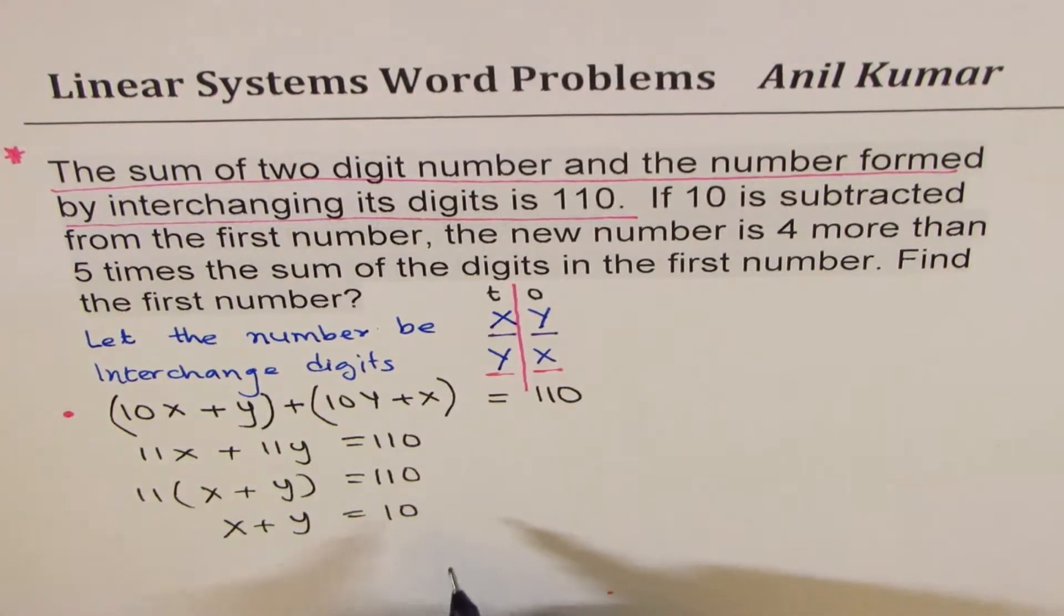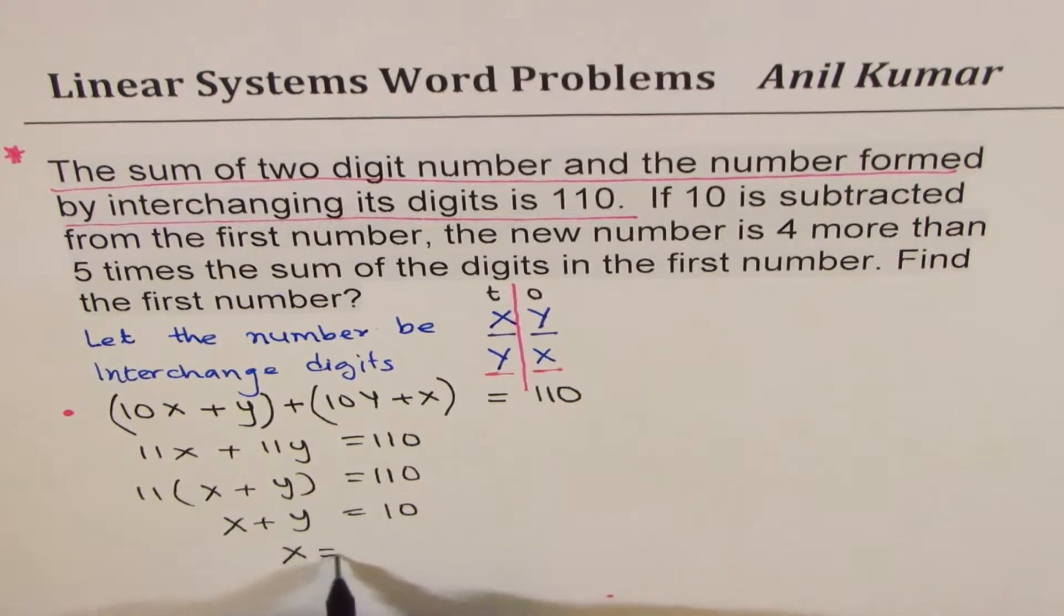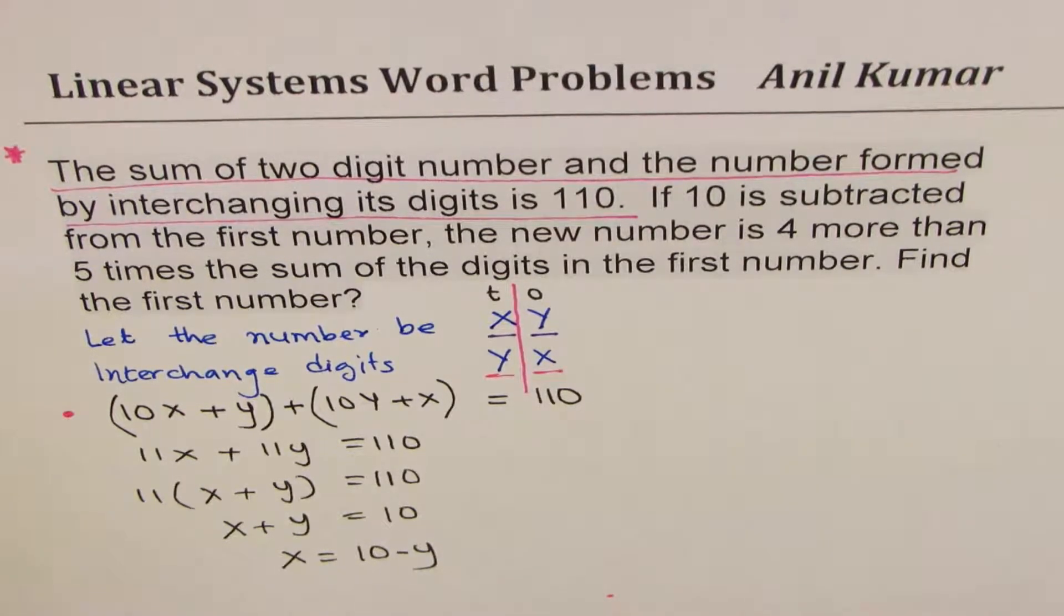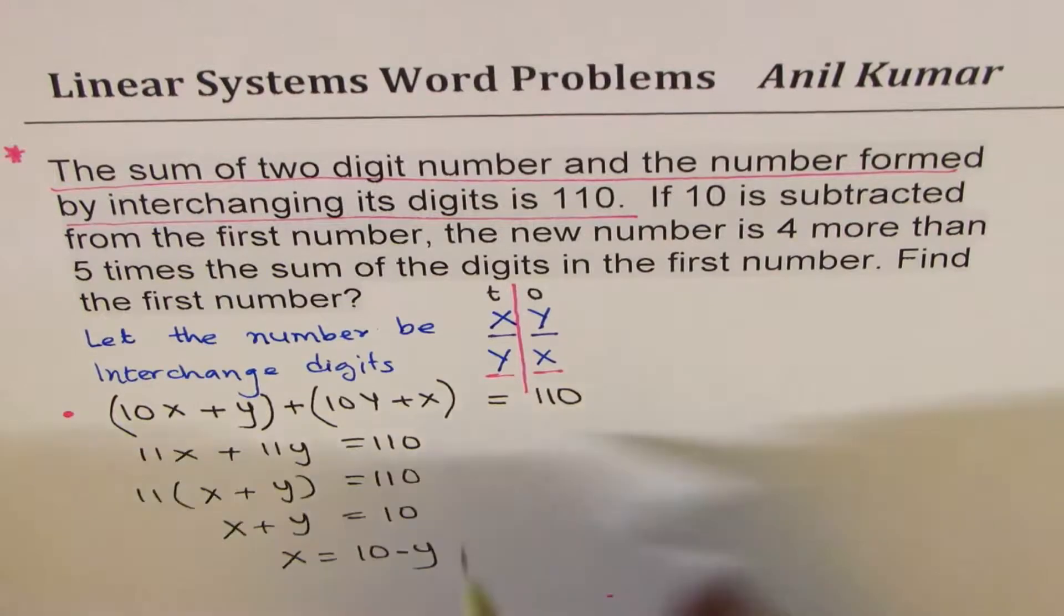You could write one in terms of the other. So you can say, x is equals to 10 minus y. So in a way, you can relate one number to the other from the given scenario.